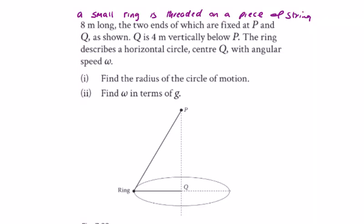In question eight, we have a small ring threaded on a piece of string eight meters long. The ends are fixed at P and Q, and the ring describes a horizontal circle. Q is four meters below P.